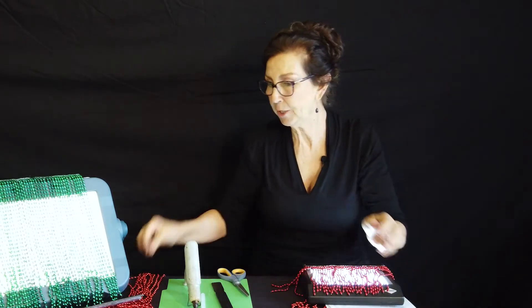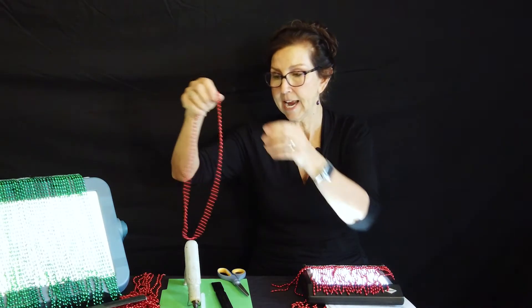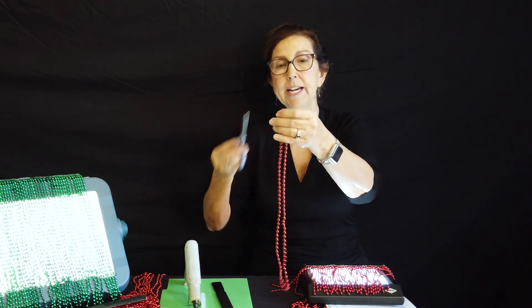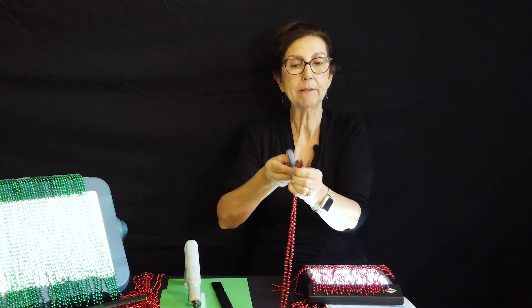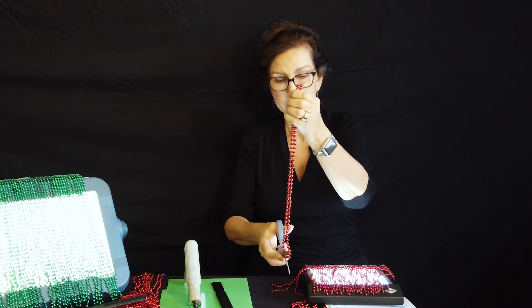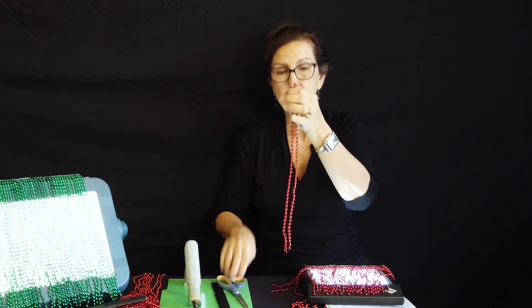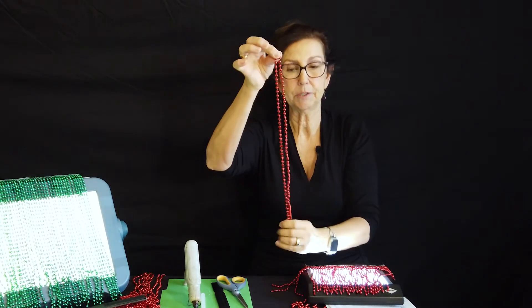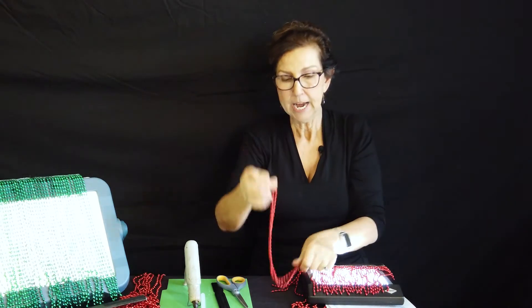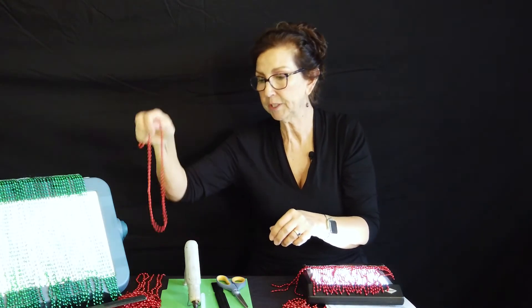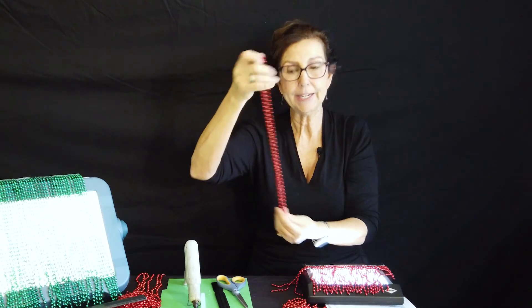Then you take each one of those necklaces and you cut it in half at the top and at the bottom so that you've got two strands. And you go through all of the strands and do that cutting until you get a big pile of them here.